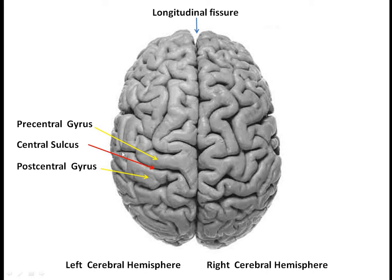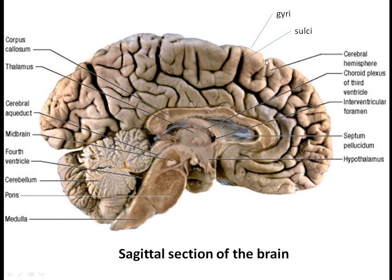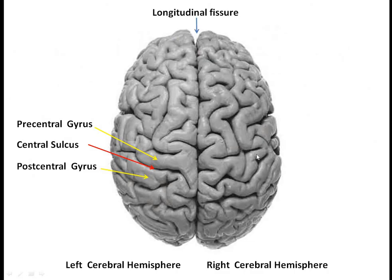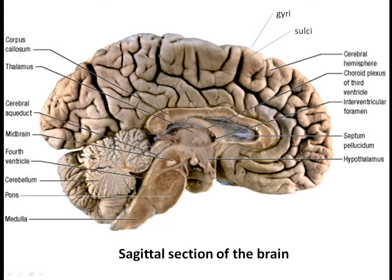There is another sulcus known as the central sulcus, which divides the cerebrum into different lobes, which we will discuss later. In the sagittal section of the brain, there is a structure called the corpus callosum. This is a nerve fiber tract that connects the two hemispheres.